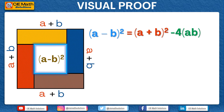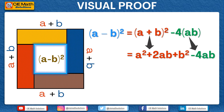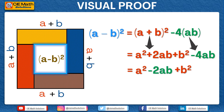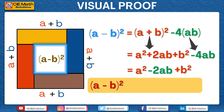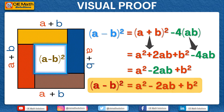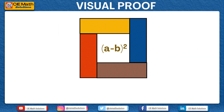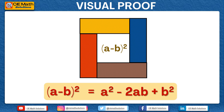Take note that A plus B squared is an algebraic identity equal to A squared plus 2AB plus B squared, then minus 4AB. We can simplify this further by combining like terms. We have 2AB and negative 4AB. We get A squared, and then 2AB minus 4AB is equal to minus 2AB, plus B squared. Therefore, A minus B squared is equal to A squared minus 2AB plus B squared. We have just shown the visual and geometric proof of the algebraic identity A minus B squared is equal to A squared minus 2AB plus B squared.